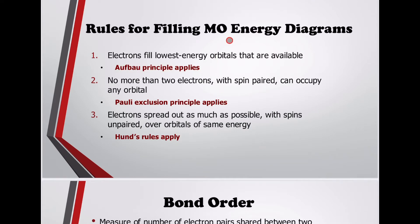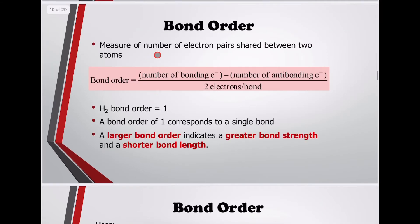Rules for filling molecular orbital energy diagrams: first, electrons fill the lowest energy orbitals available — the Aufbau principle applies. Second, no more than 2 electrons with spins paired can occupy any orbital — the Pauli exclusion principle applies. Third, electrons spread out as much as possible with spins unpaired over orbitals of the same energy — Hund's rule applies.